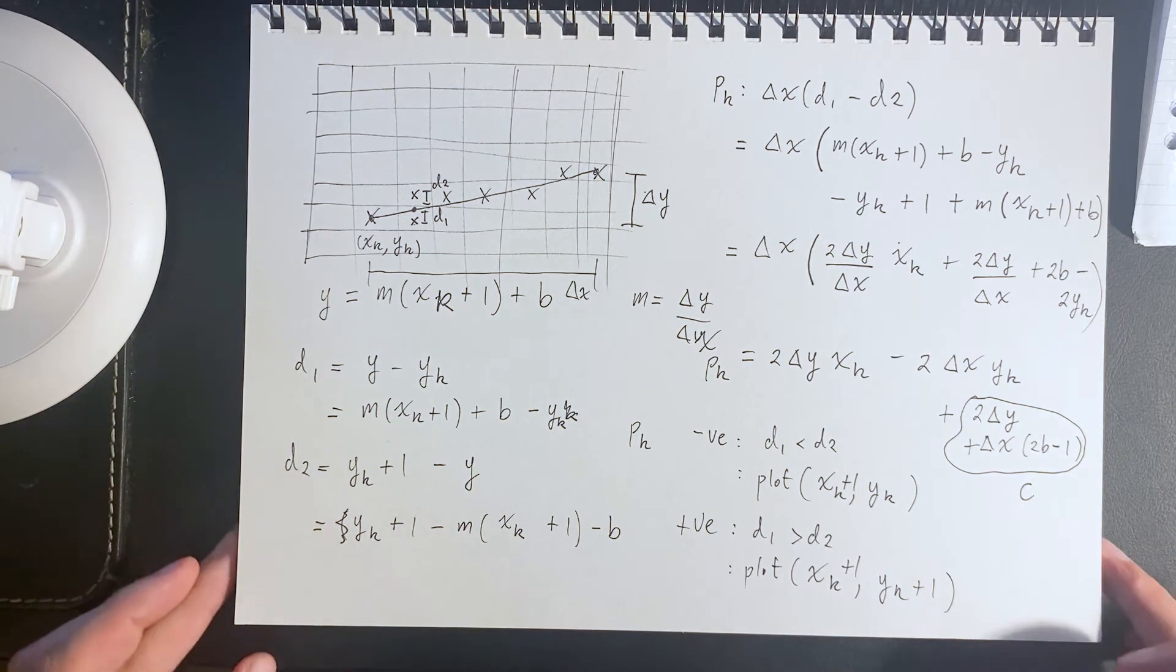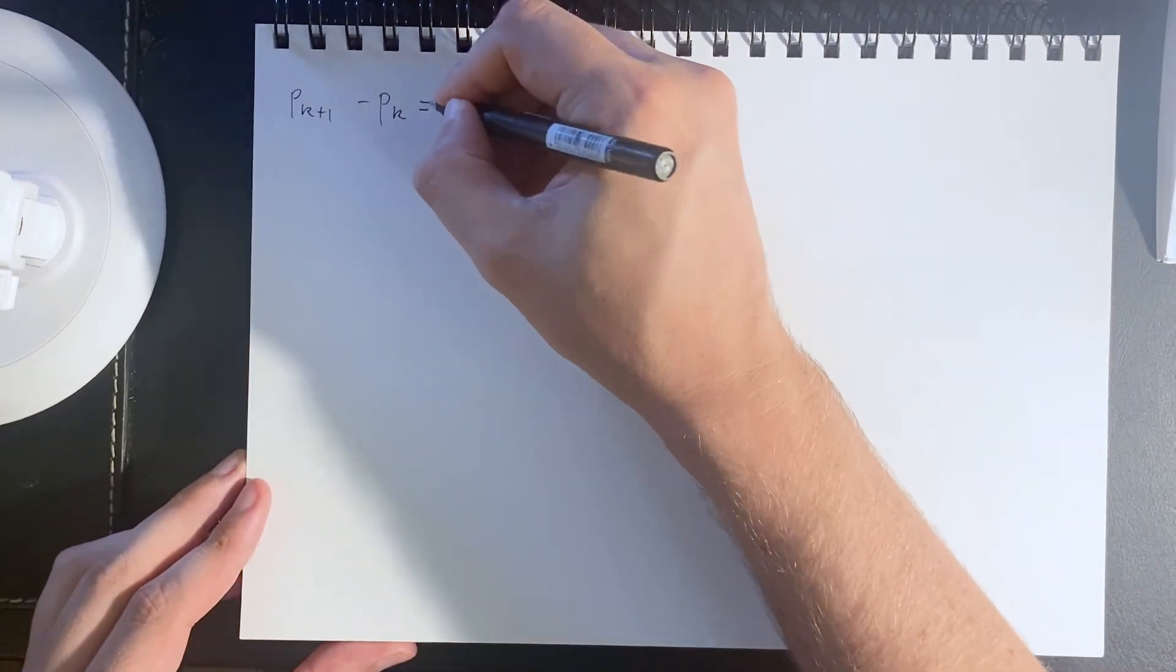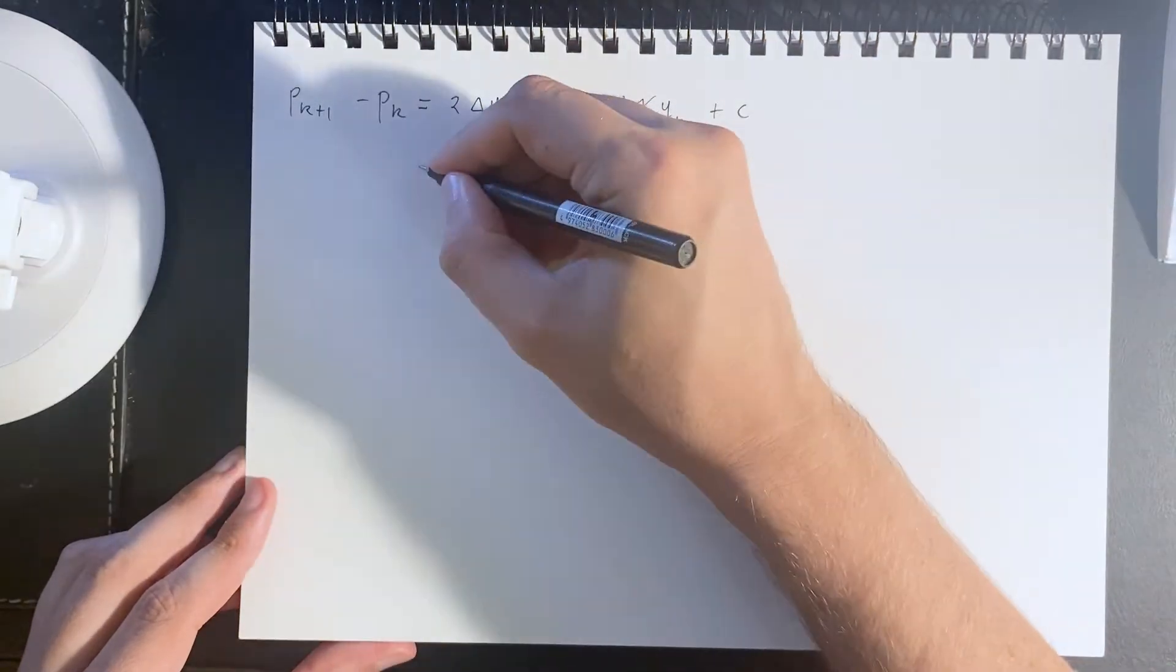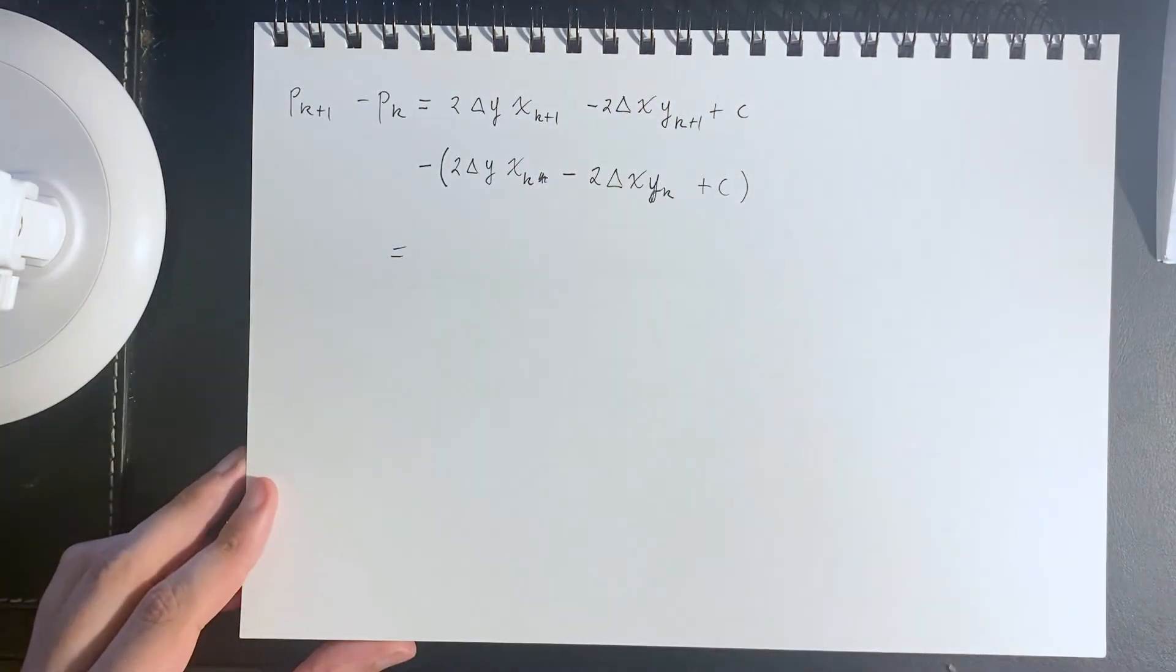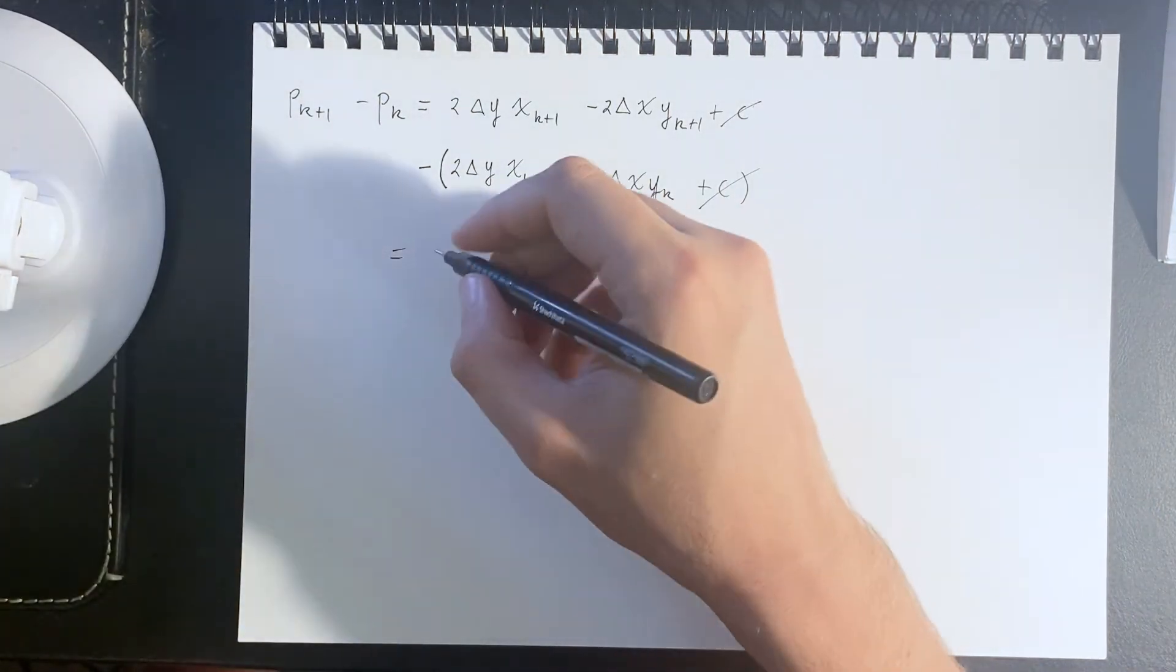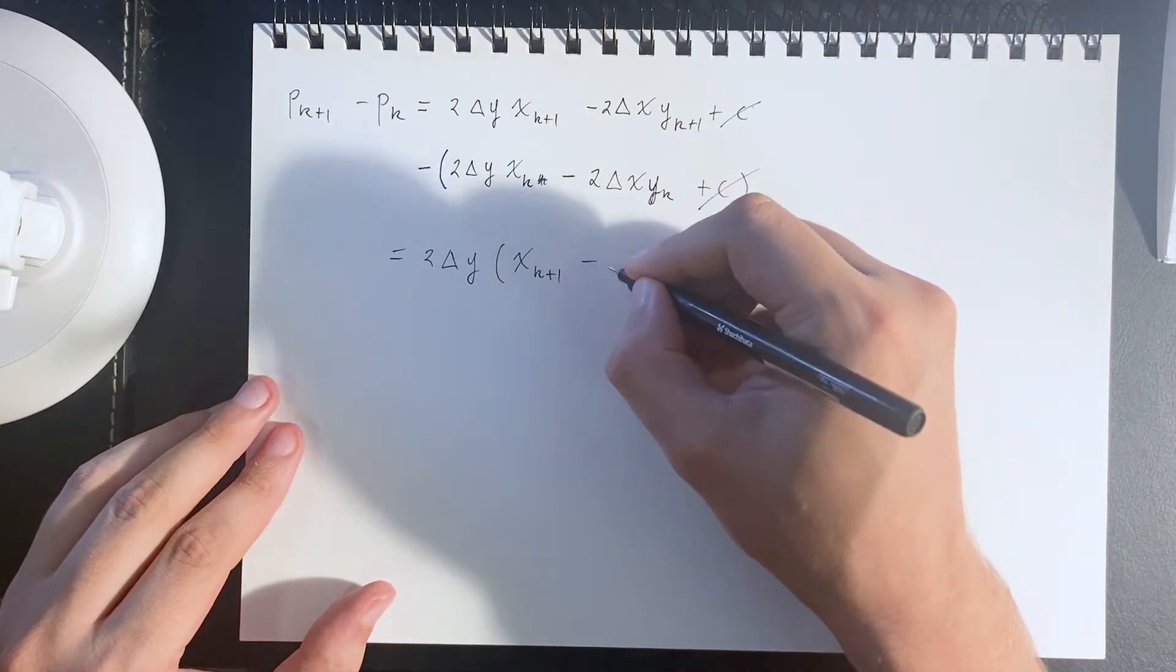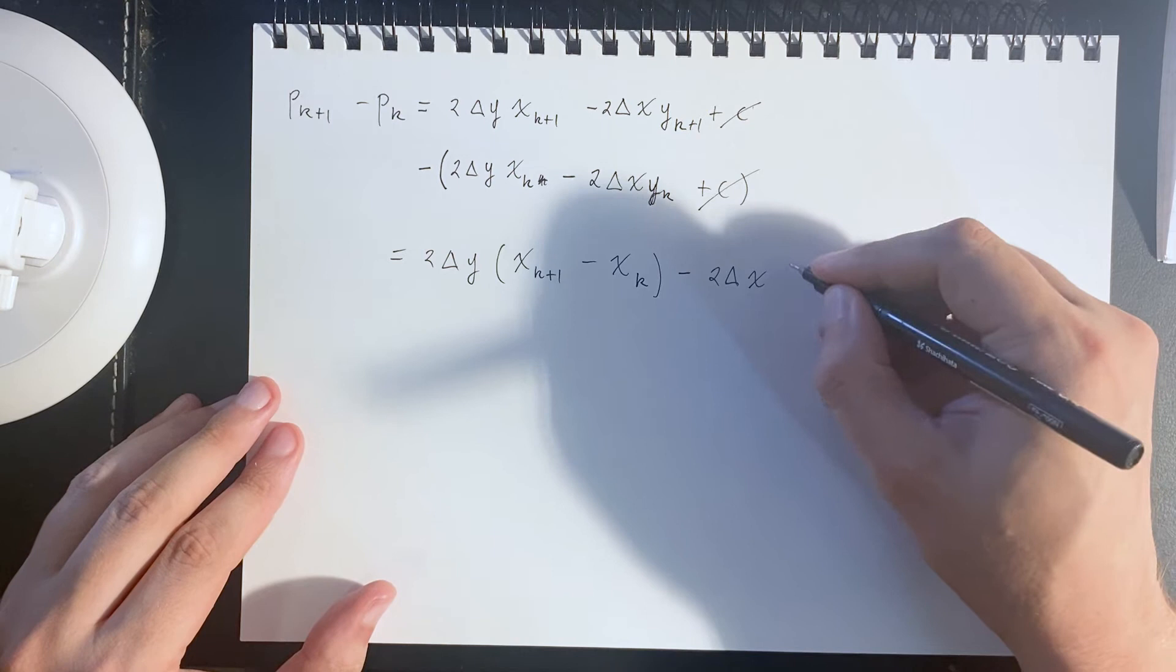Now, how do we turn this into a recursive formula? Well, just have a look at this. A little messy there, but as we can see, c minus c will cancel out, and then this simplifies to 2 delta y times the x difference minus 2 delta x times the y difference.